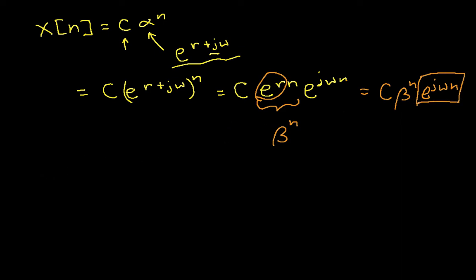Those of you that have not yet heard of Euler's formula will hear more about it than you really want in a signals and systems class. The idea is that e to an imaginary, raised to an imaginary number can be written as the cosine of omega n plus j times the sine of omega n.